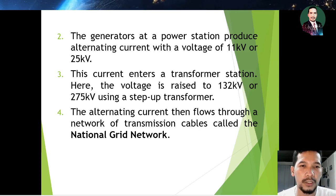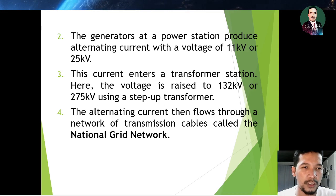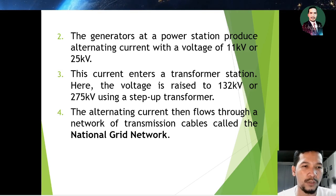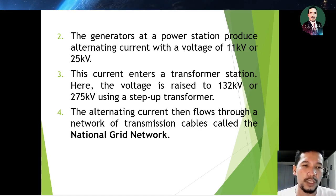The generators at the power station produce alternating current with a voltage of 11 kilovolts or 25 kilovolts. This current enters a transformer station where the voltage is raised to 132 kilovolts or 275 kilovolts using step-up transformers.